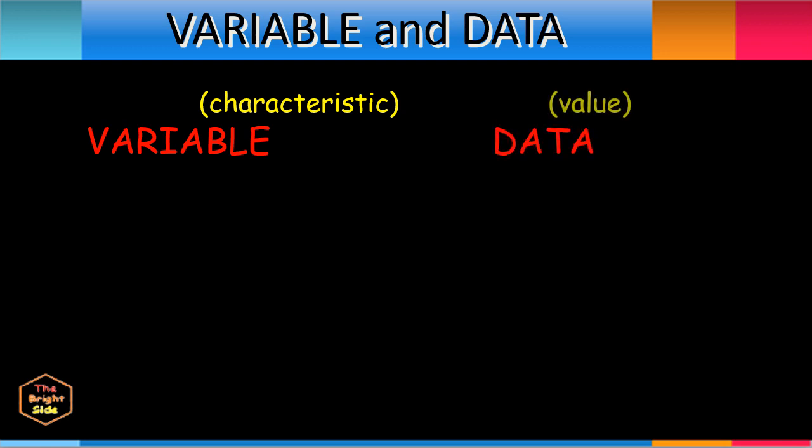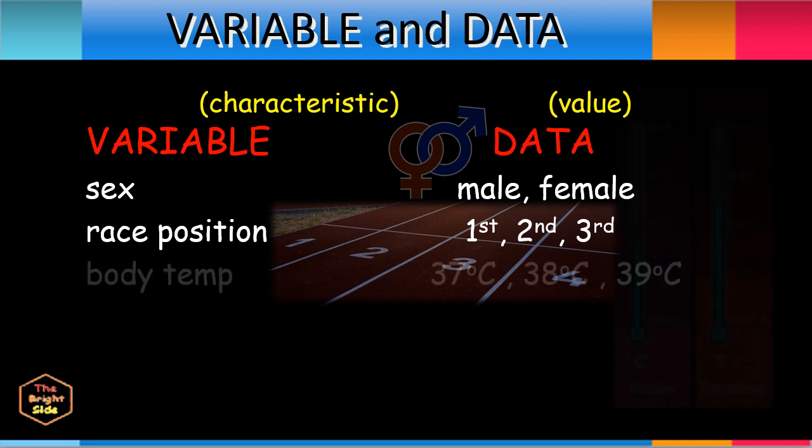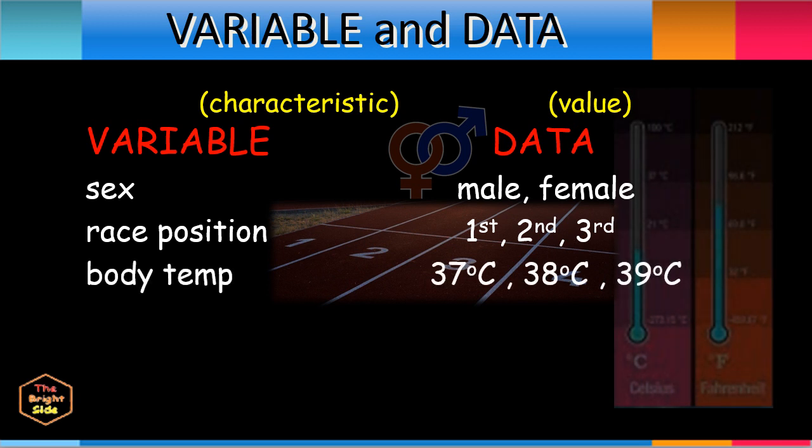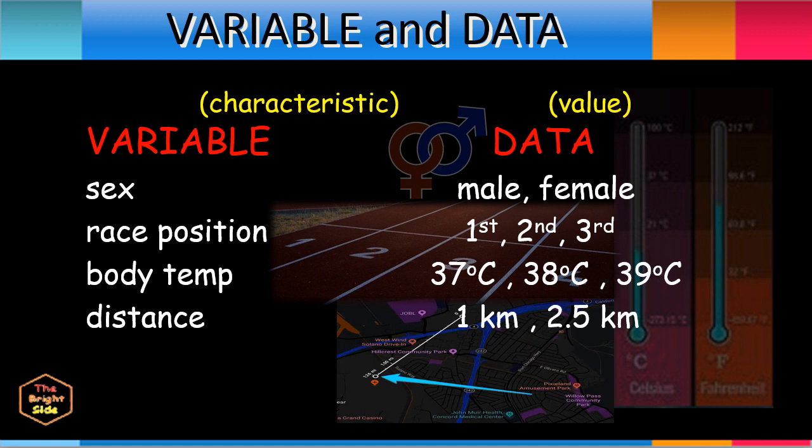Here is an illustration showing some variables, or characteristics, and the corresponding data samples, or sample values, for each variable. For the variable sex, data may be male or female. For the variable race position, the data values can be first, second, or third. For body temperature, some values can be 37, 38, or 39 degrees Celsius. Distance traveled may have values such as 1 kilometer or 2.5 kilometers.